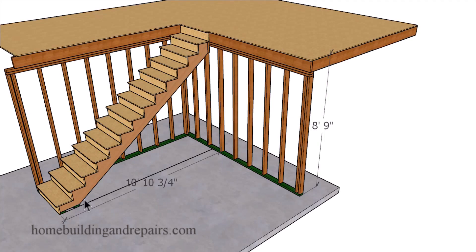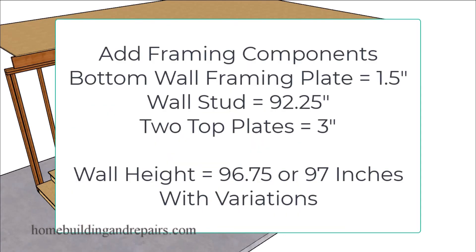Let's walk through an example of one of these problems where we're going to figure out the total rise so that we can figure out the individual riser height. We can do that by adding up a few numbers. To find the wall height, all we need to do is add the lower framing plate and the two upper framing plates together to get 4.5 inches.